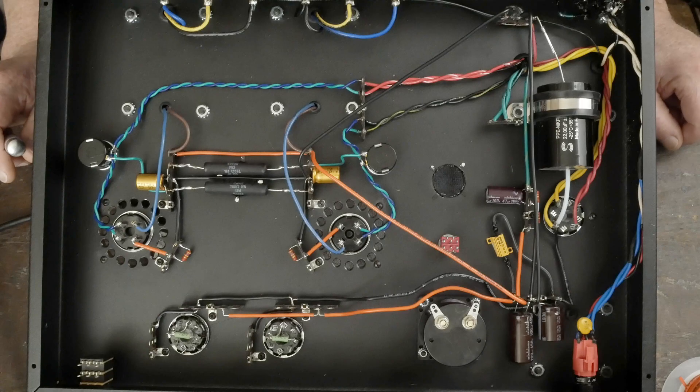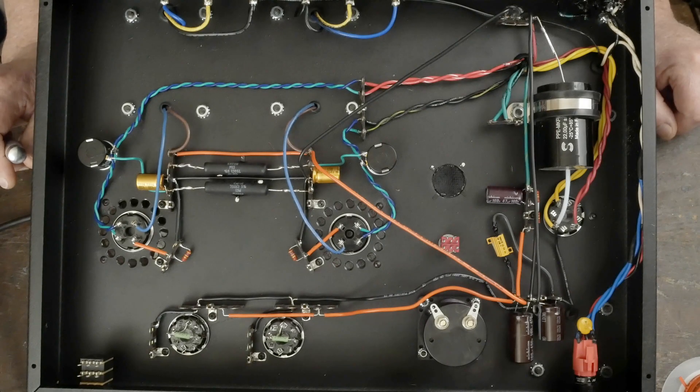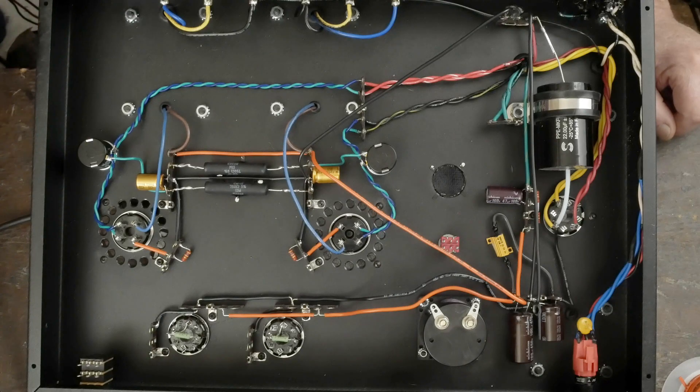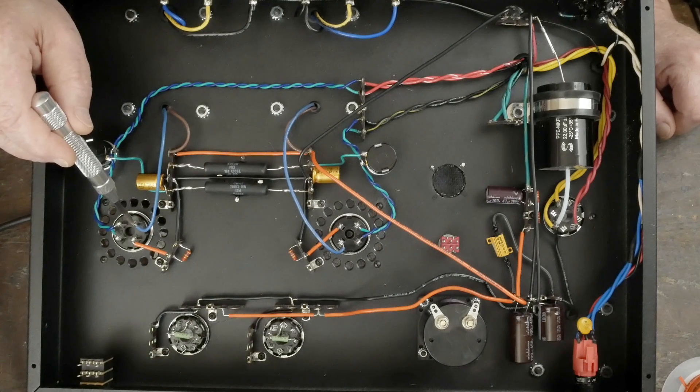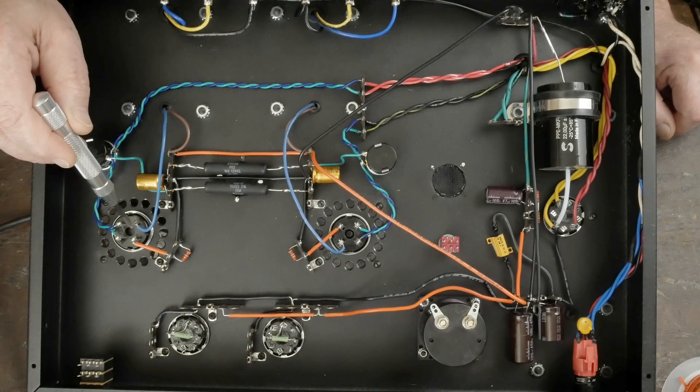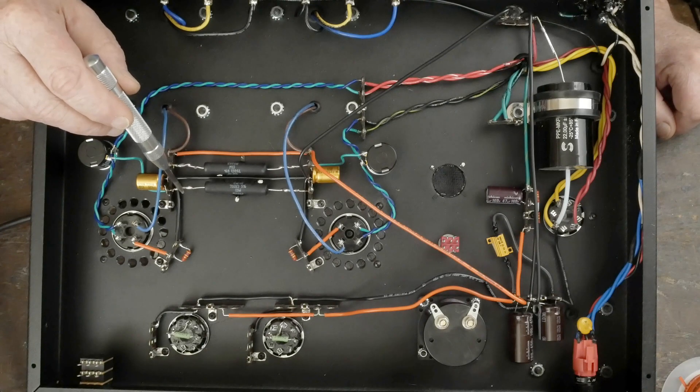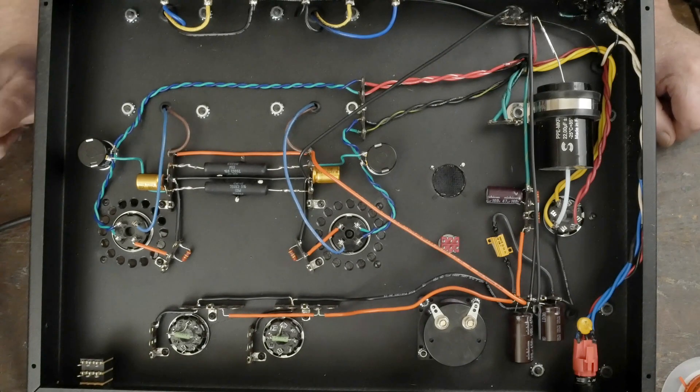So I ended up using a 5Y3 rectifier tube, which dropped the voltage on the plate of the output tube to 304 volts. I've got 44 volts on the cathode, which is just a breath over 15 watts.